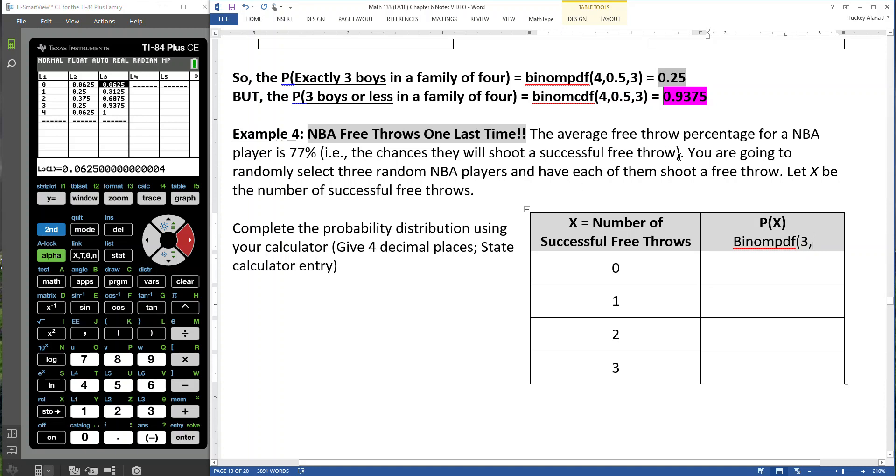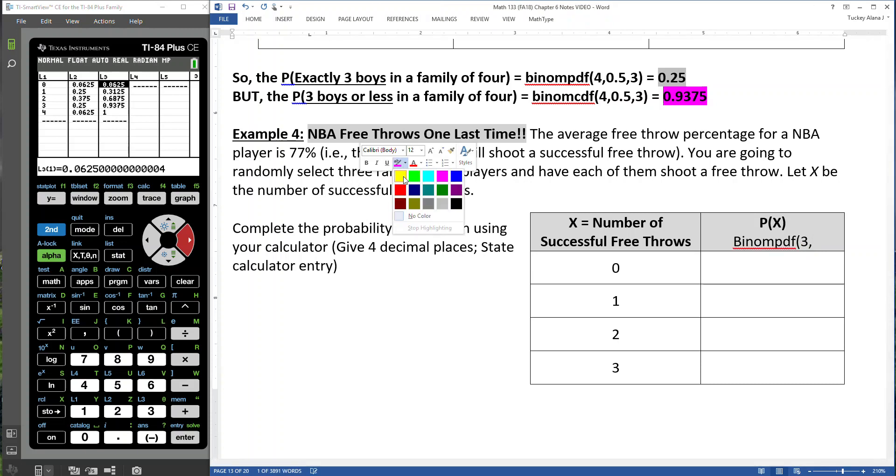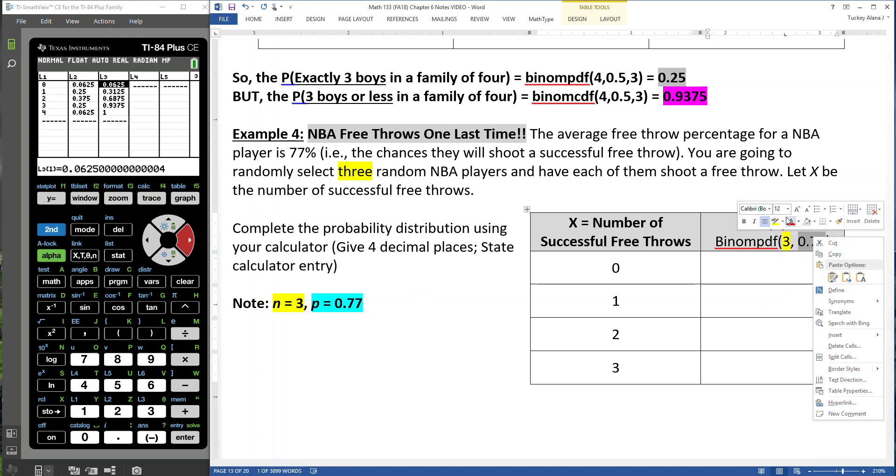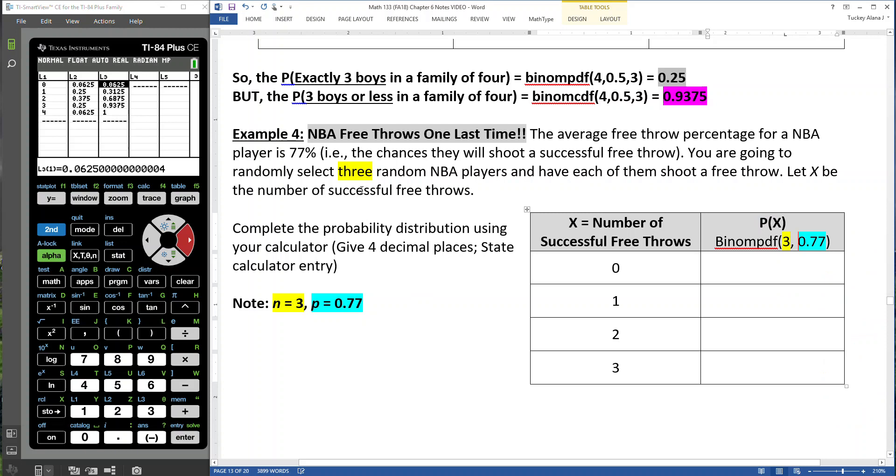It would be three as my n, because n is equal to three shots, right? We're going to have three random NBA players right there. So that's why it's three. N is equal to three. And our probability of success is equal to 0.77, right? Because these are NBA players, so they've got a good chance of success. If I don't put in a number, it'll actually just find all of them for me. So if I leave it at 0.77 right here as my probability of success.